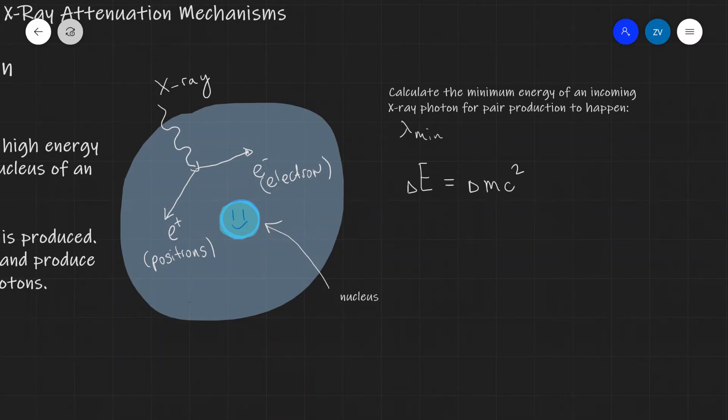Now our change in mass in this scenario, because we're getting a pair of electrons, sorry, a pair of electron and a positron, will actually be equal to two times the mass of an electron, because a positron and electron have the same mass, so it's going to be twice times 9.11 times 10 to the power of minus 31.